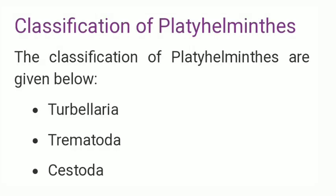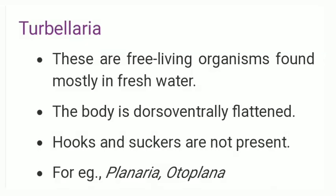The classification of Platyhelminthes has three classes: Turbellaria, Trematoda and Cestoda. Turbellaria are free-living organisms found mostly in fresh water. Their bodies are dorso-ventrally flat and hooks and suckers are not present. Examples include Planaria and Autoplana.